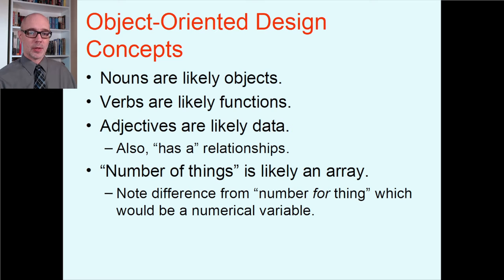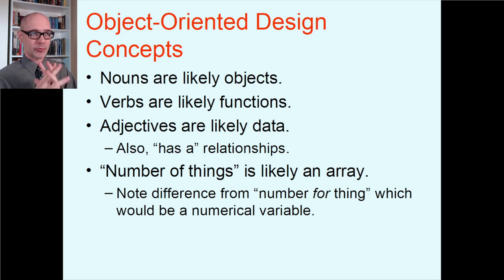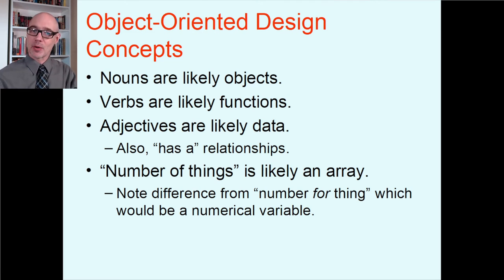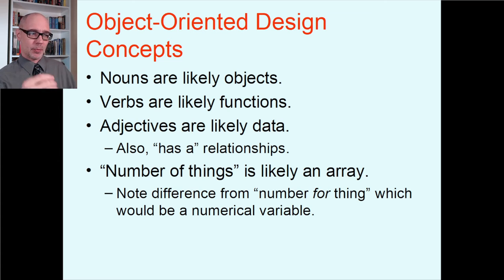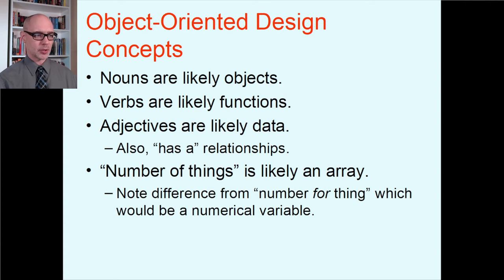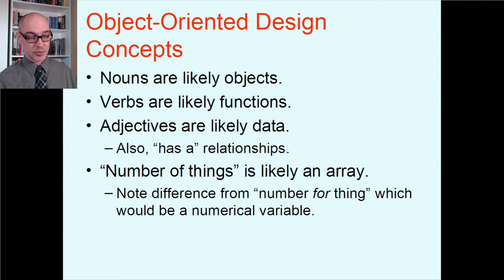Notice that's different from saying there's a number for a thing, which would be one numerical variable. Linguistically you want to be careful: there's a difference between having five football jerseys — an array of size five — versus a football jersey with the number five on it, which would be one member variable holding the value five. Read the specifications very carefully. You have to be a very good reader to be a good software engineer. In the lab at the end of this section, there is actually a class where one of the member variables is an array.